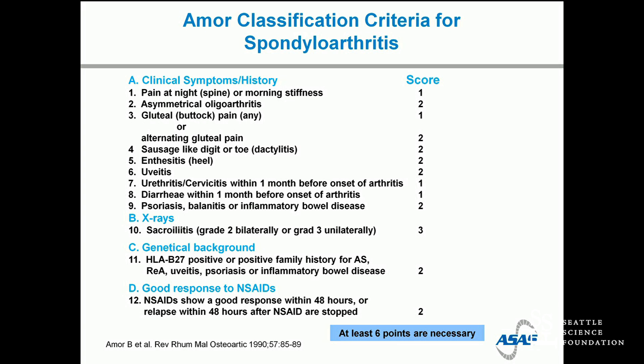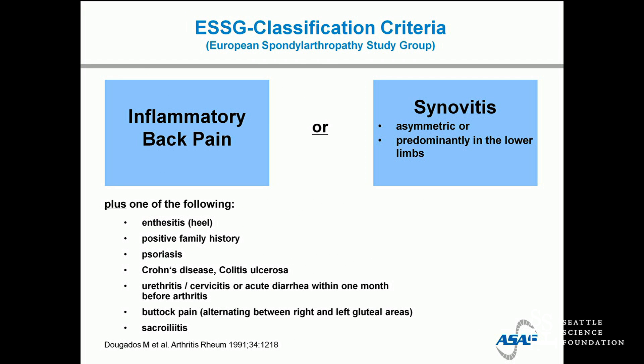This was one of the earlier efforts to move forward from the 1984 criteria — the Amor criteria from Paris — which collected a number of symptoms and signs characteristic of spondyloarthritis, still only using x-ray at that time, and added in HLA-B27. If you got a certain number of points, you were likely to have a spondyloarthritis. This was soon followed by the ESSG criteria, which used inflammatory back pain or asymmetric peripheral joint involvement plus a number of characteristic features to make a diagnosis.